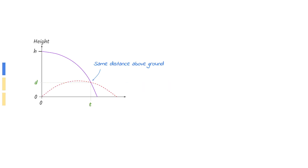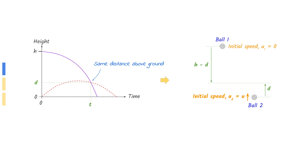At time T, both balls are at the same distance above the ground. Let's call this height D. This means that at time T, ball one travels downwards a distance of H minus D, and ball two travels upwards a distance of D.